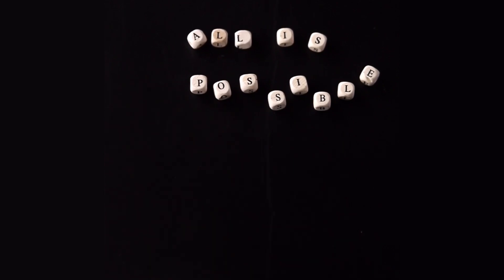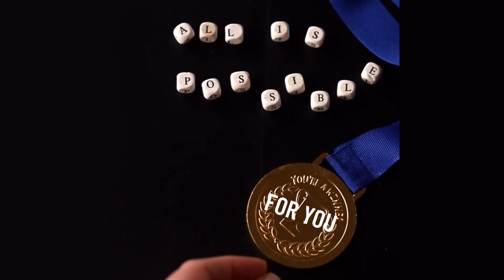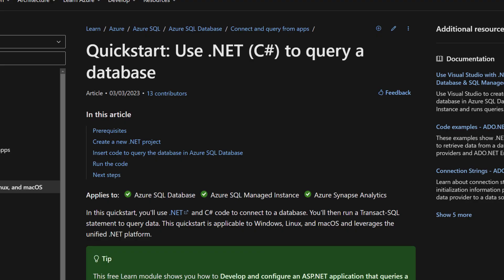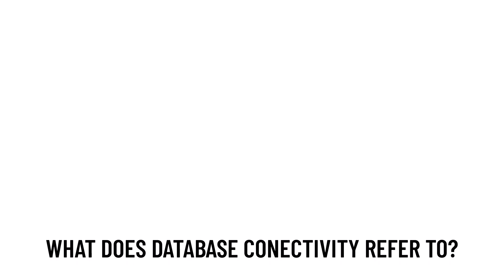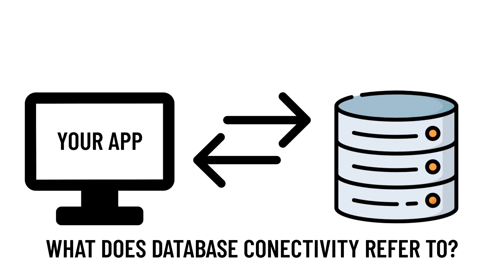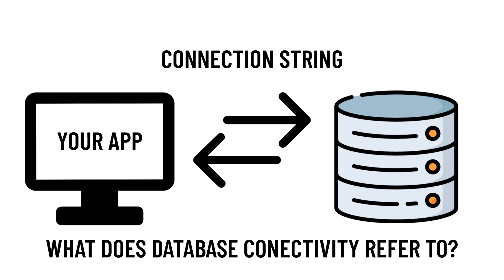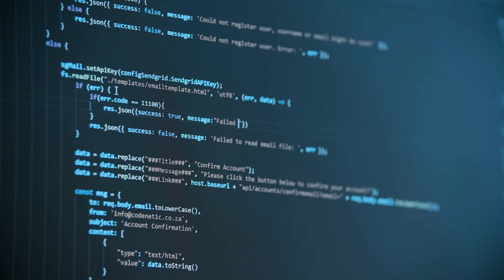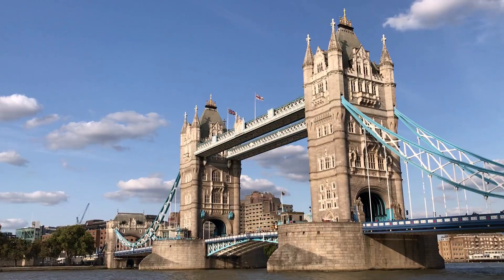There's a slight possibility you've decided to jump into this video because you're interested in improving your databases or your general knowledge about database development, but aren't fully sure yet what database connectivity even means. In simple terms, database connectivity refers to the connection between your application and a database — it's how your application communicates with a database to perform operations like reading, writing, updating, and deleting data. It's like the bridge that connects your application to the data it needs to function.